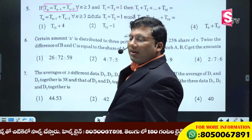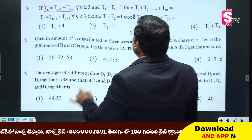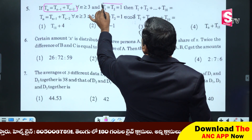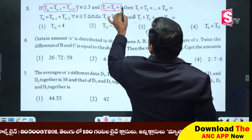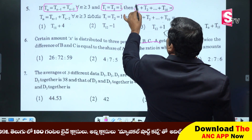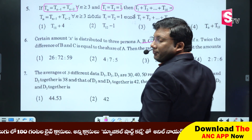I have a doubt about T1 equivalent to T2 equivalent to 1. T1 plus T2 and so on up to T10.